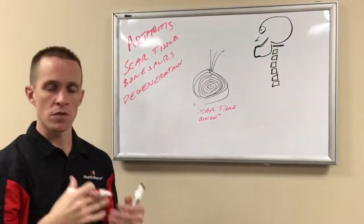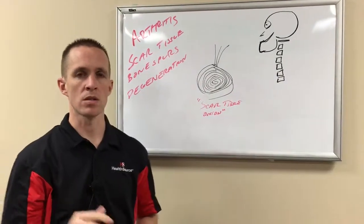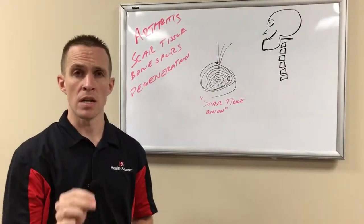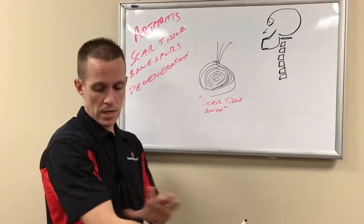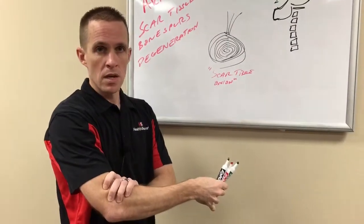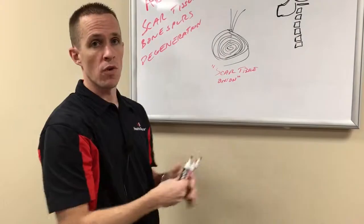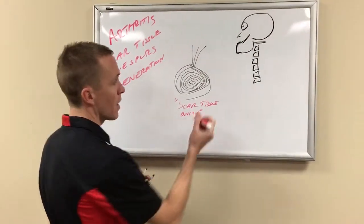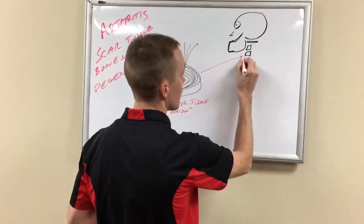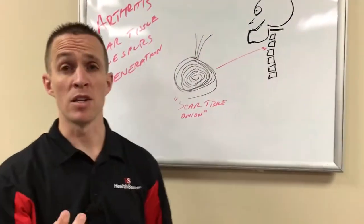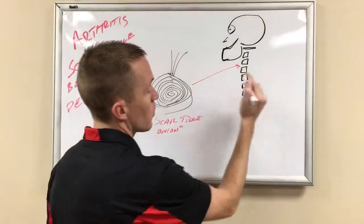The scar tissue onion is what starts to form every seven days. They did a research study on rabbits. They immobilized one of their joints and found that within seven days of an immobile joint, scar tissue formed up. So what does that do in our spine? This scar tissue onion, if we have an area that's injured in a joint in our neck, the joint starts to layer that scar tissue down, layer after layer after layer.